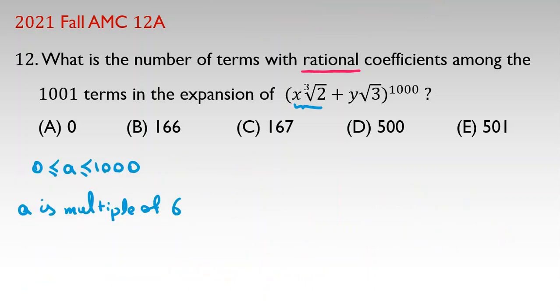So, because a is multiple of 6, one useful way you can say a equal to 6q. And, if we replace it here, 6q greater than or equal to 0, less than or equal to 1000.